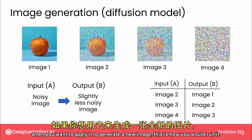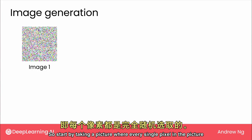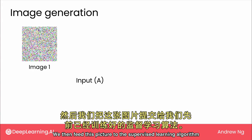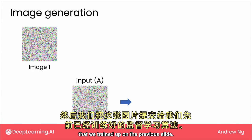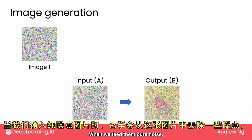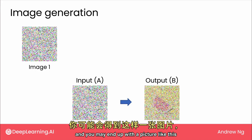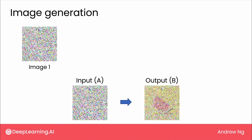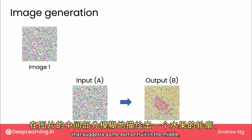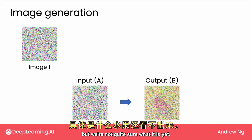You would start off with a pure noise image — every single pixel in the picture is just chosen completely at random. We then feed this picture to the supervised learning algorithm that we trained. When we feed it pure noise, it learns to remove a little bit of noise from this picture, and you may end up with a picture that suggests some sort of fruit in the middle, but we're not quite sure what it is yet.